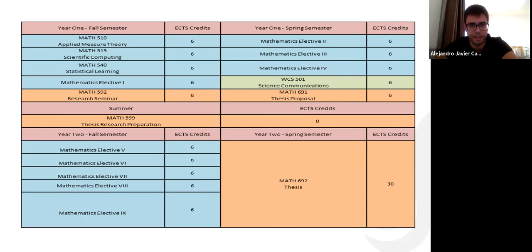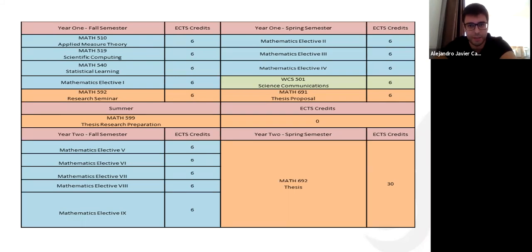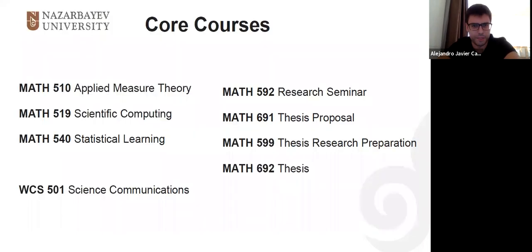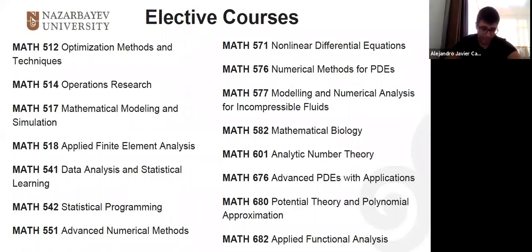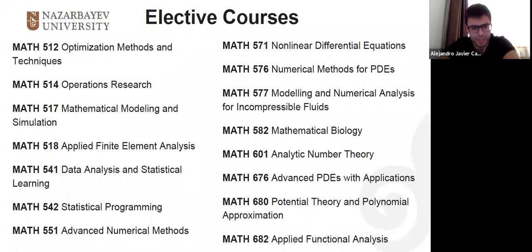To summarize the course categories: blue courses are math courses, orange are research courses, and green is the writing course. For electives, there is a list of 15 — and this is not a closed list. Every semester we introduce new electives according to your preferences. If you're really interested in a particular topic, you can discuss it with us and we may create that course.